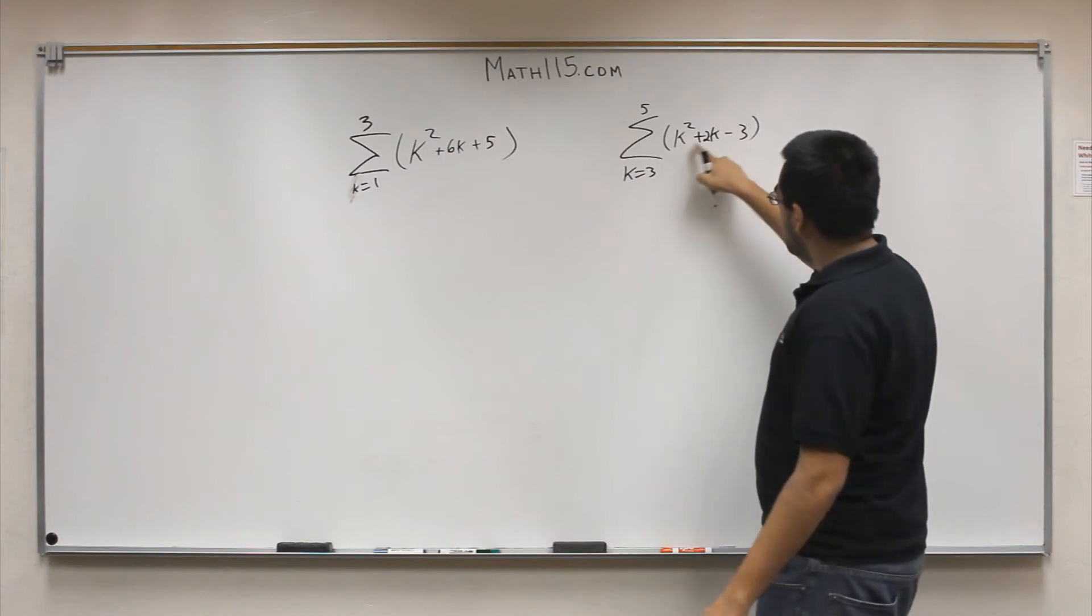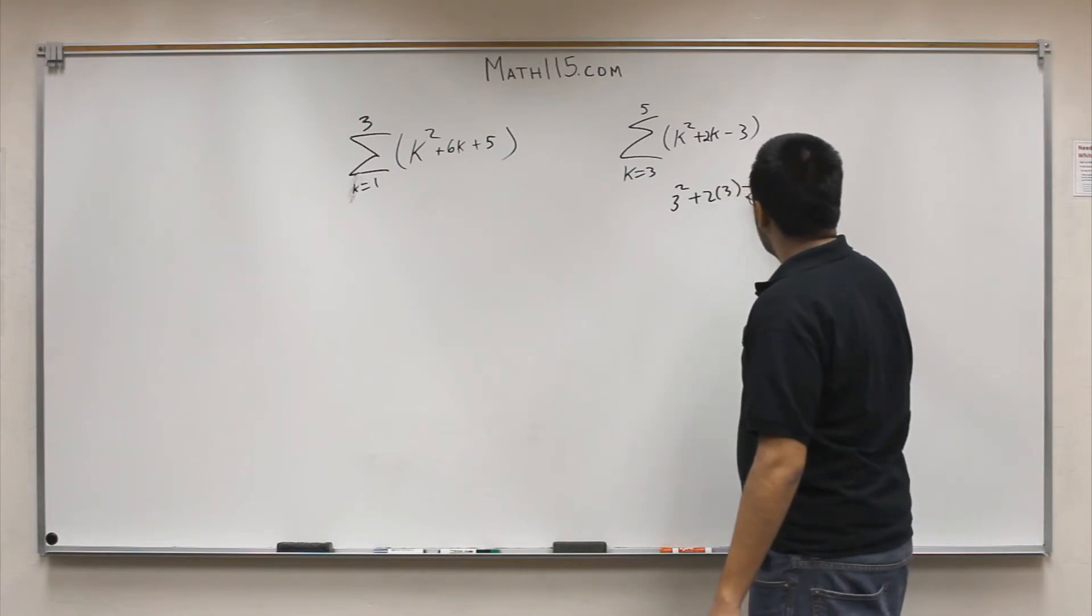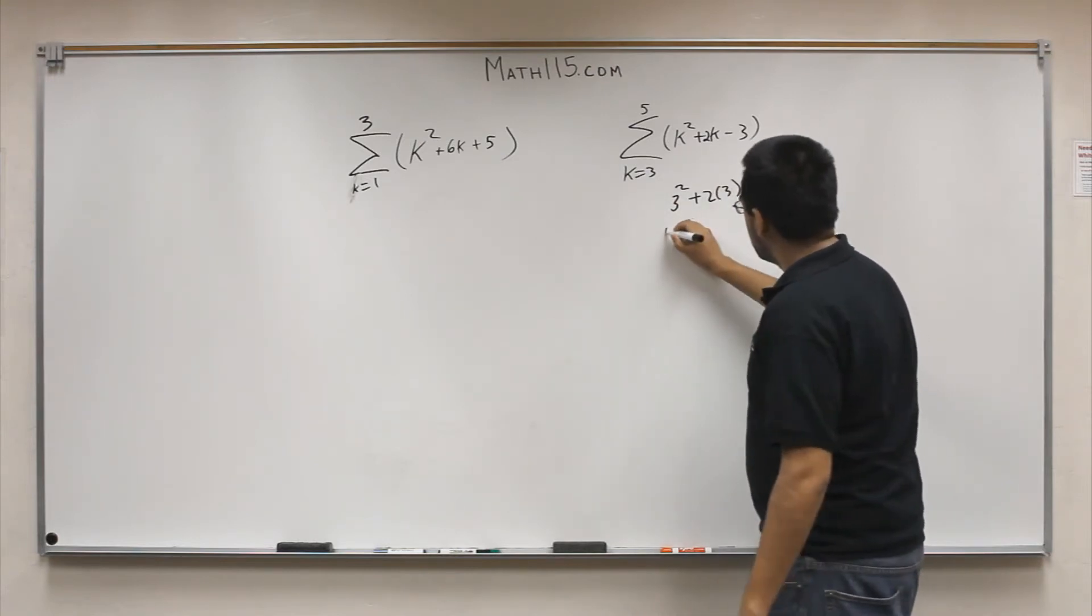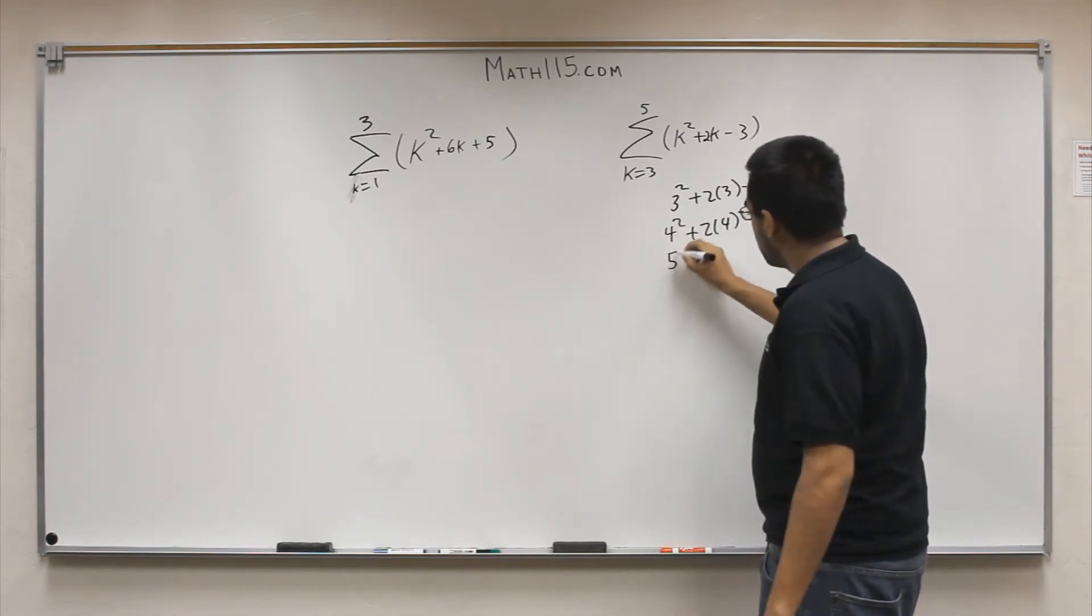So we're going to plug in 3 into each of these variables k right here. So we got 3 squared plus 2 times 3 minus 3 and then we can plug in 4. So I'll do an equal sign. We'll do 4 squared plus 2 times 4 minus 3 is equal to that. And then finally we plug in the 5.